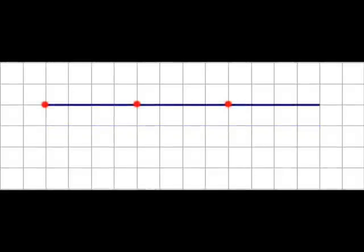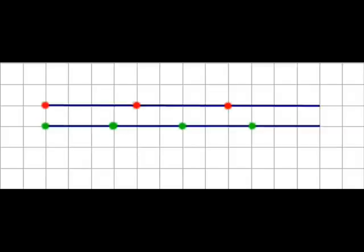Now we'll take a ruler, a piece of paper, and draw a line with twelve equal intervals. Next we're going to fit three notes on this line, equally spaced — there it is — and then four notes on the line, equally spaced. Then we'll put the two lines together, and now you can see how the notes fit.